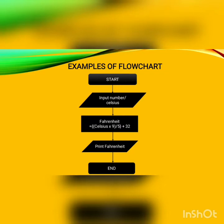Here is an example of a flowchart. This flowchart shows the conversion of Celsius to Fahrenheit temperature. After starting, the user provides some numeric data which is stored in computer memory with the name celsius. In the next step, the result is computed by applying the formula to convert Celsius temperature to Fahrenheit. The result is stored with the name fahrenheit, displayed using an output device, and then the flowchart ends.